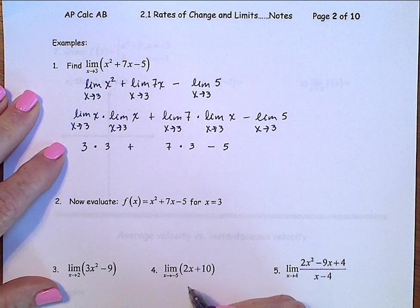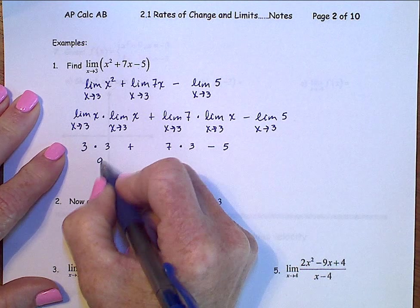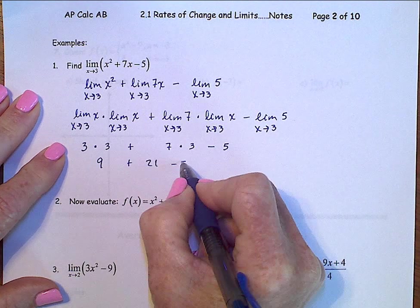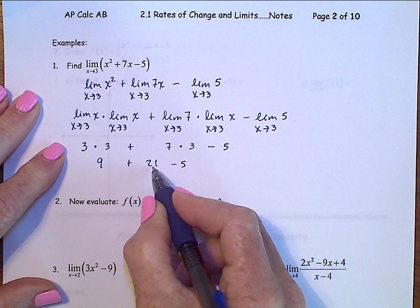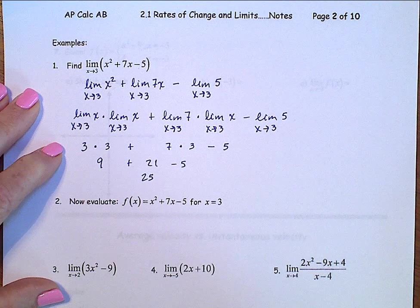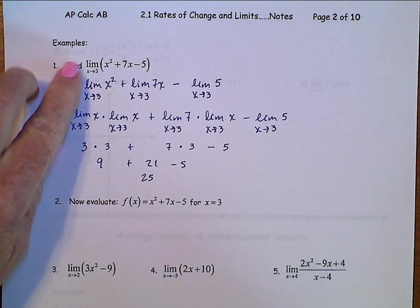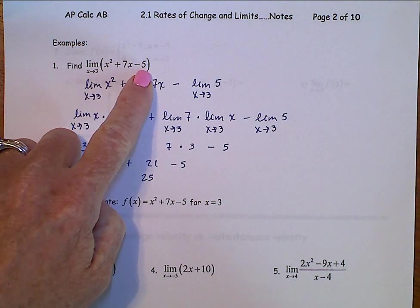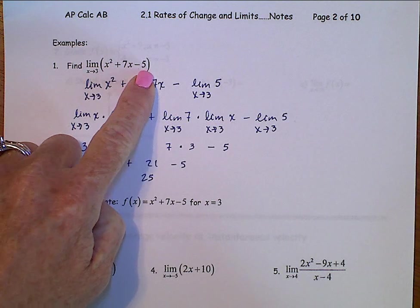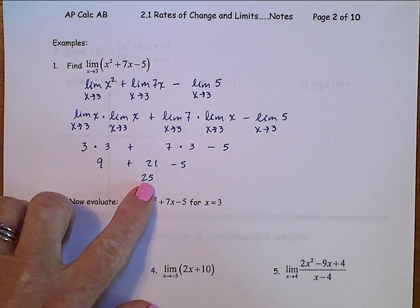And we have 9 plus 21, minus 5, 9 and 21, 30, minus 5, 25. So this says that as x gets close to 3 of this quadratic expression, the y values will get close to 25.